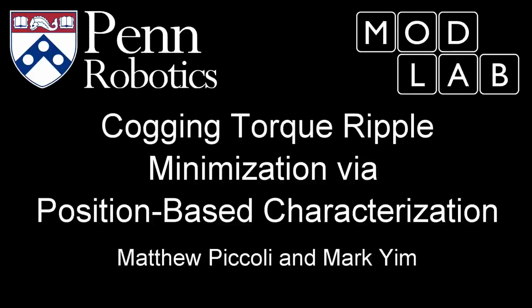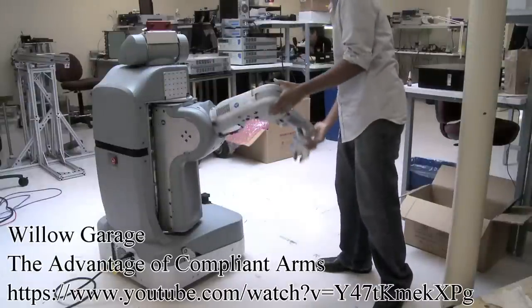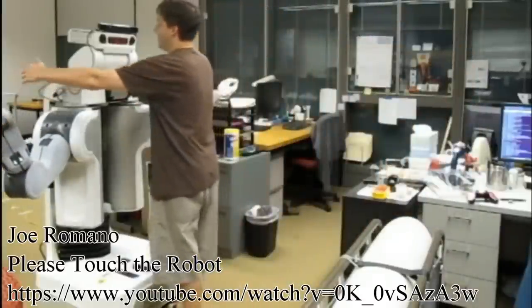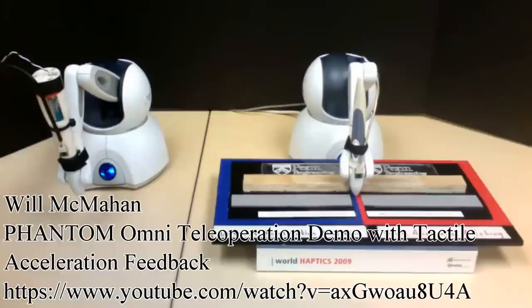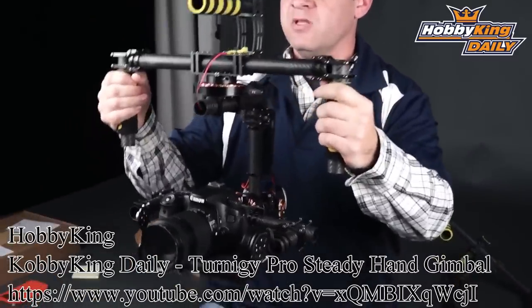Cogging torque ripple minimization via position-based characterization, or what we call anti-cogging. Lots of robots require high torque, direct drive or low gear ratio actuators, such as human-safe back-drivable robotic arms, haptic devices, and high fidelity position control.